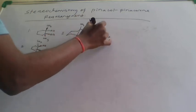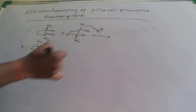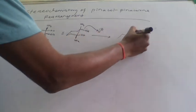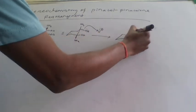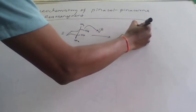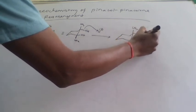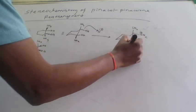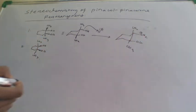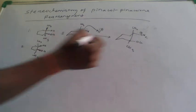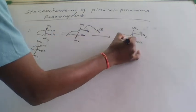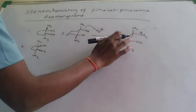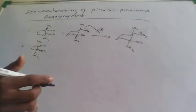The pinacol-pinacolone rearrangement takes place under acid conditions. In acid conditions, one OH is extracted as OH2 positive — forming a leaving group — and carbocation rearrangement takes place. Here we have CH3, OH2 positive, OH, and CH3 on the ring.